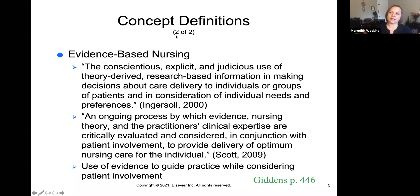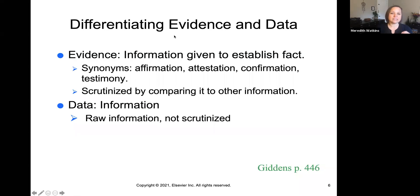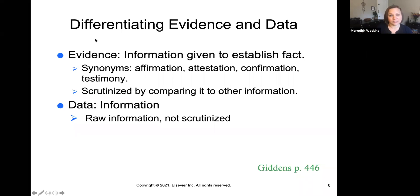While there's a baseline understanding of what is fact and what is evidence-based, there's certainly still ambiguity for how that's applied to a specific patient. Evidence is synonymous with attestation, confirmation, and testimony — it's scrutinized by comparing it to other information to determine if it's reliable and valid. Data, on the other hand, is just raw information that is not scrutinized to establish fact.